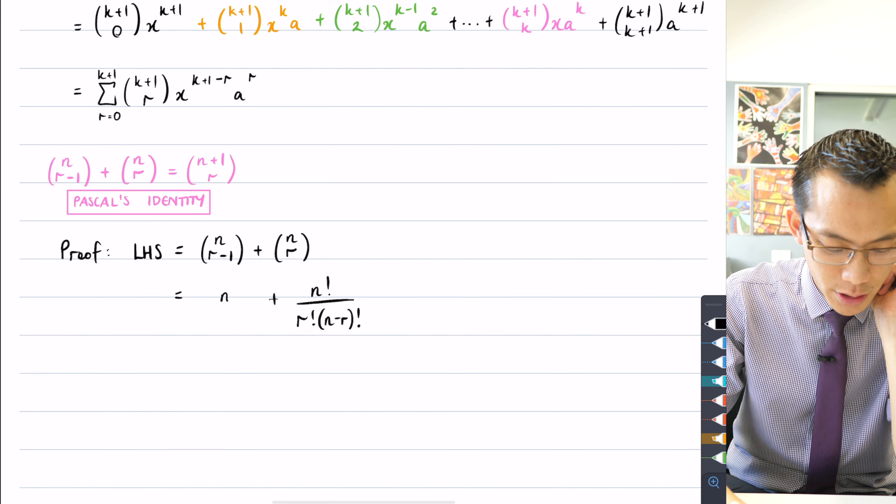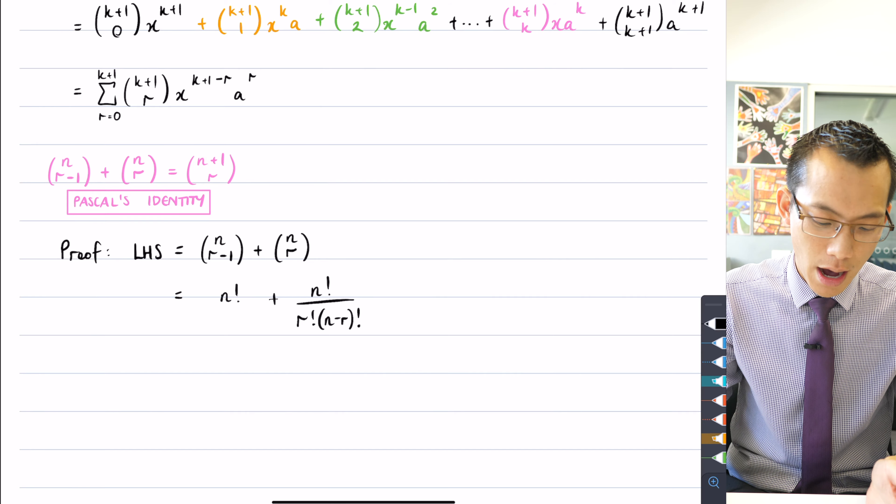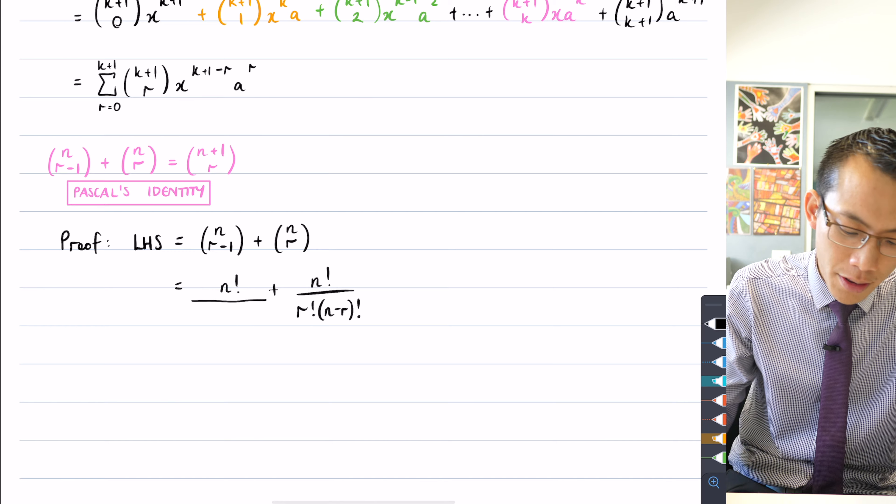So for starters, the numerator is going to be the same. That makes sense. We're in the same row of Pascal's triangle. So you get an n factorial on the top. Then on the denominator, what's going to happen here?